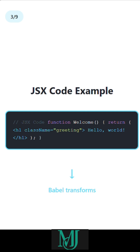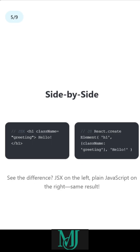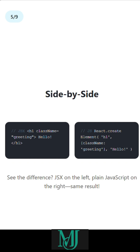Here's what JSX code looks like. Babel transforms this special syntax behind the scenes. What does Babel do? It converts your JSX into calls that browsers understand. Like this JSX on the left, plain JavaScript on the right — same result, just different ways to write it. See the difference.